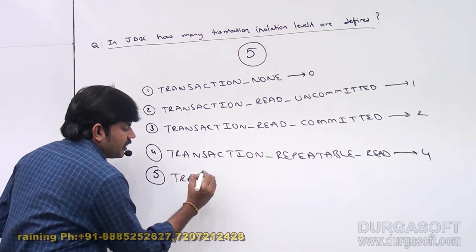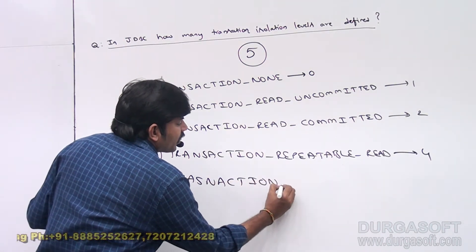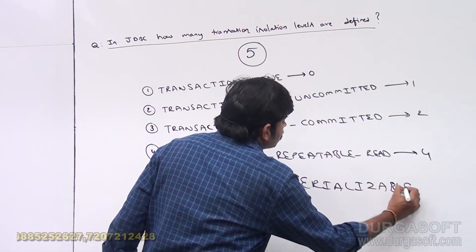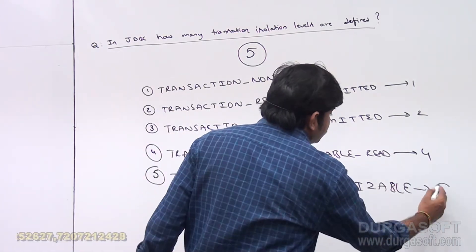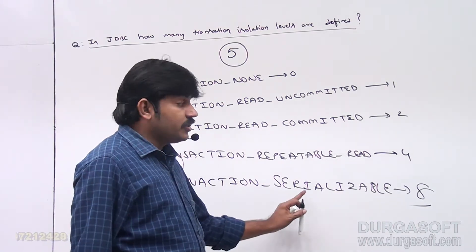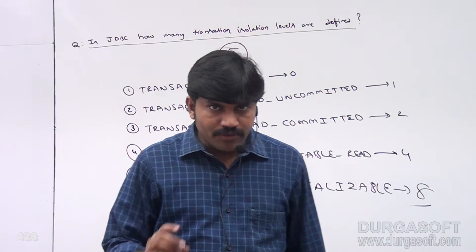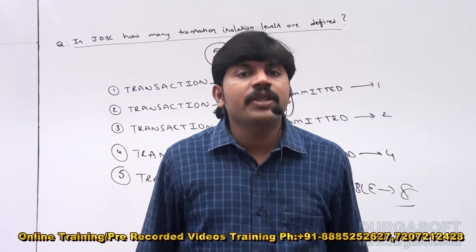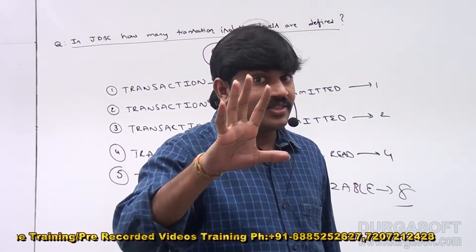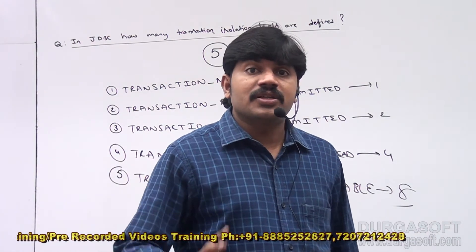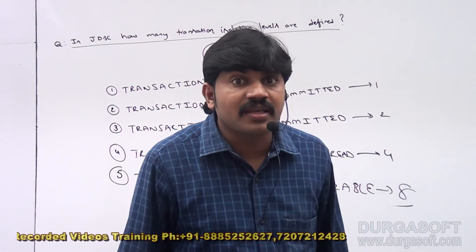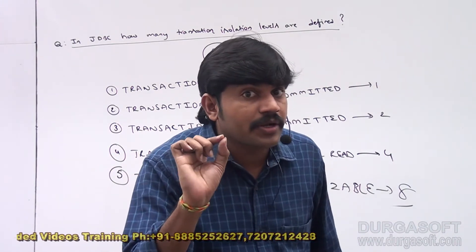The fifth and last one is TRANSACTION_SERIALIZABLE — the most powerful and highest level of isolation. The biggest advantage is that all three concurrency problems by default will be solved, but there is a performance issue, which is why this isolation level is not recommended. So in the interview room, the answer to how many isolation levels are in JDBC is 5: TRANSACTION_NONE, TRANSACTION_READ_UNCOMMITTED, TRANSACTION_READ_COMMITTED, TRANSACTION_REPEATABLE_READ, and TRANSACTION_SERIALIZABLE.